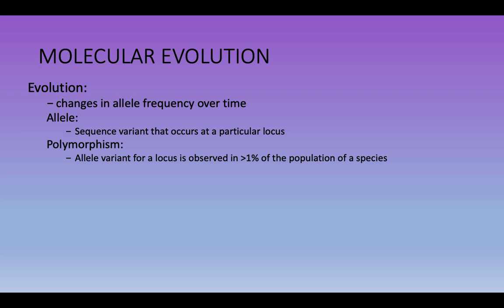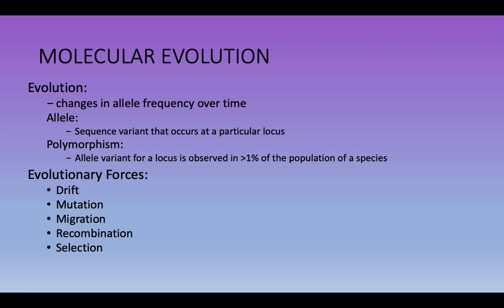We can see more than one allele at any one position. When we talk about what drives evolution, there are generally five principal factors: drift, mutation, migration, recombination, and selection. Natural selection is the one we often hear most about, but the other four — drift, mutation, migration, and recombination — are incredibly important to the evolutionary process and are often given short shrift in popular approaches and sometimes by biologists as to what's actually driving the dynamics of the system.